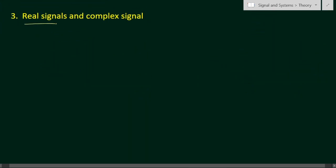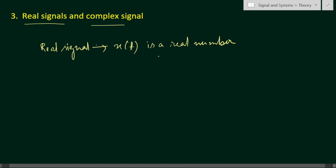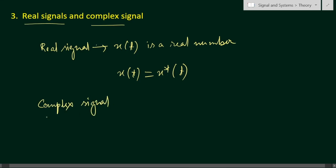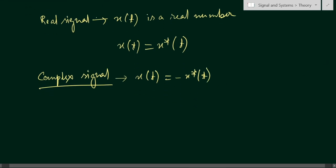In the third classification, we have real signals and complex signals. For a real signal, x(t) is a real number — it does not have any imaginary part. A real signal satisfies x(t) equal to x conjugate of t. For a complex signal, x(t) is NOT equal to x conjugate of t.